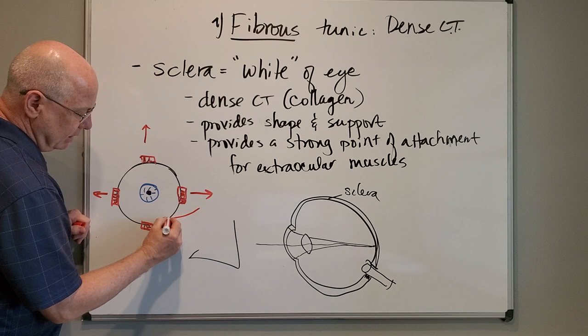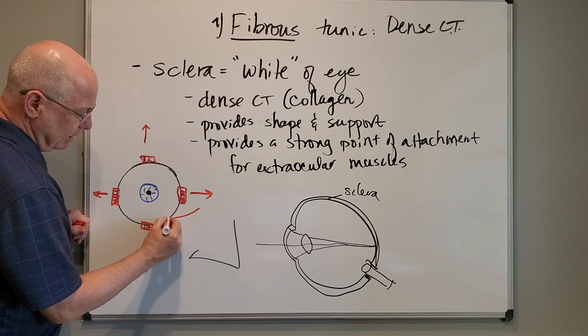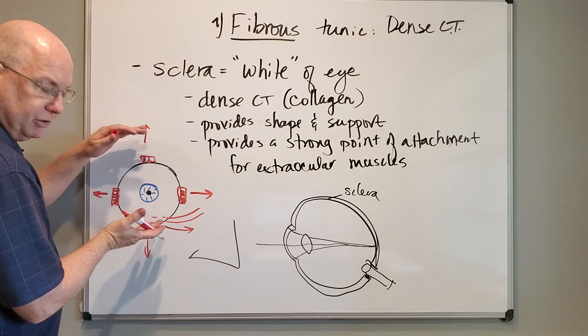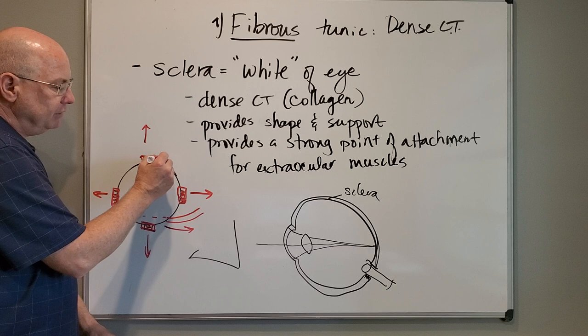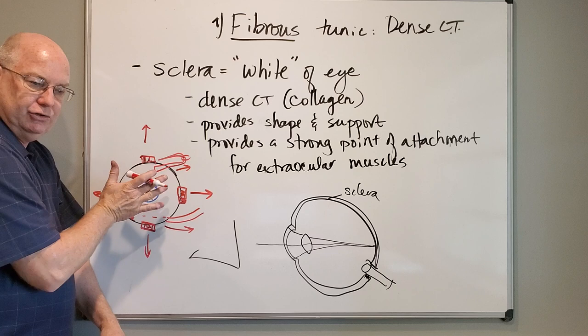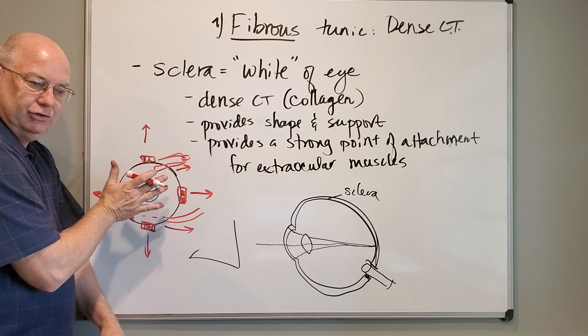There's an inferior oblique that comes from underneath the eye and runs a little posterior before attaching. When it contracts, it rotates the eyeball so the top goes laterally and the bottom goes medially. There's also another muscle that loops through a little piece of connective tissue — that's the superior oblique — and when it contracts, it pulls through a little pulley or trochlea, making the eyeball rotate in the opposite direction.